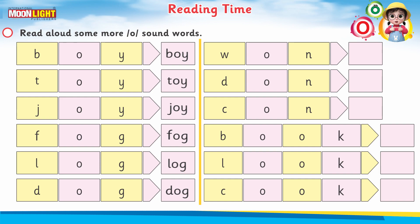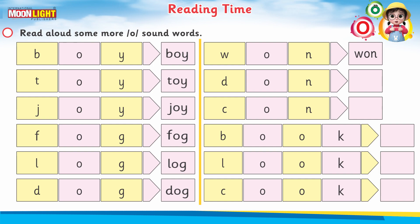Now, dear students, moving to the next column, and that is 'one' — W-O-N, 'one.' Here you can listen the sound of O is different — it is 'a.' This is not 'won,' this is 'one.' W-O-N, 'one.'